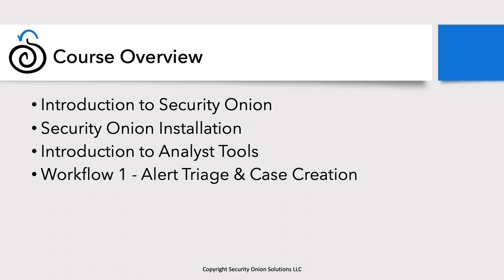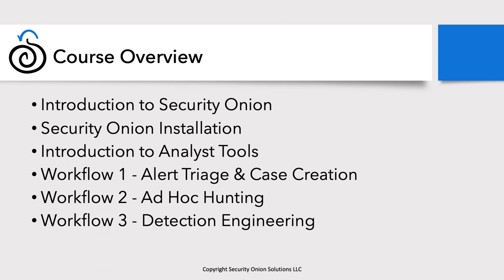The second workflow is ad-hoc hunting. This is where you don't necessarily start with an alert — you start with a question or a hypothesis and then go out and look through the data in Security Onion to try to answer that question. The third workflow is detection engineering, a process of developing new detection strategies, and we'll show you how to do that within Security Onion itself.